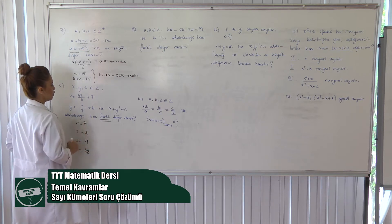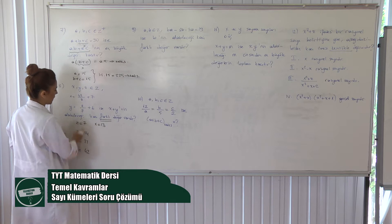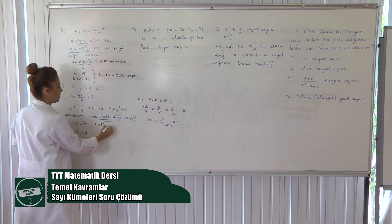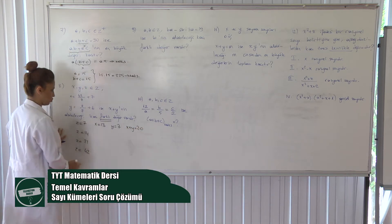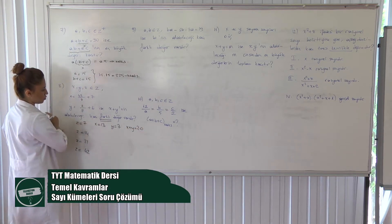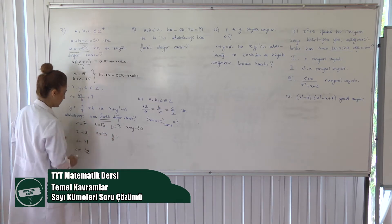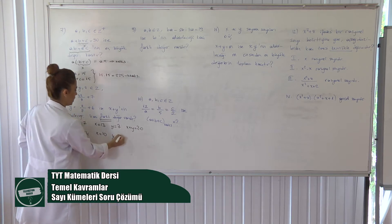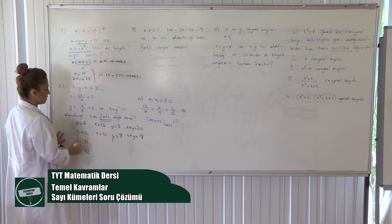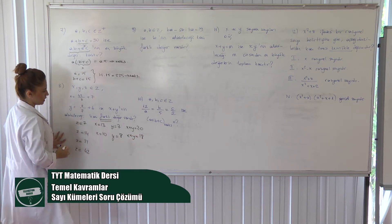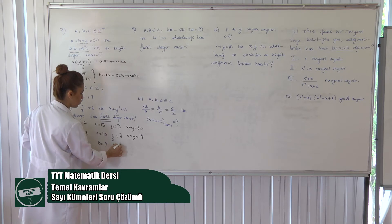Z'ye 7 verirsem: 42 bölü 7 = 6, 7 daha X = 13. Z bölü 7 = 1, 6 daha Y = 7. X artı Y = 20. Z'ye 14 verirsem: 42 bölü 14 = 3, 7 daha X = 10. Y değeri 14 bölü 7 = 2, 6 daha Y = 8. X artı Y = 18. Z'ye 21 verirsem: 42 bölü 21 = 2, 7 daha X = 9. 21 bölü 7 = 3, 6 daha Y = 9. X artı Y yine 18 geldi.